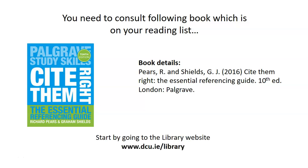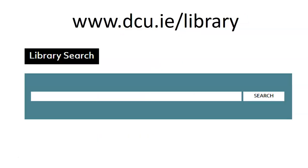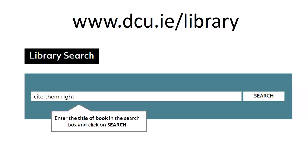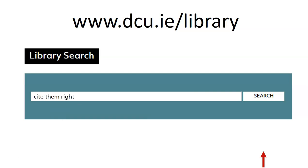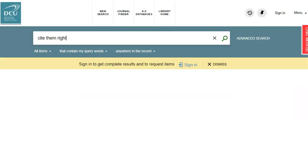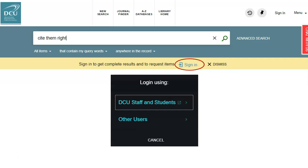Go to the library website and use Library Search to find the book. Enter the title of the book in the search box and click on Search. Before reviewing your results, it's a good idea to sign in using your DCU username and password.